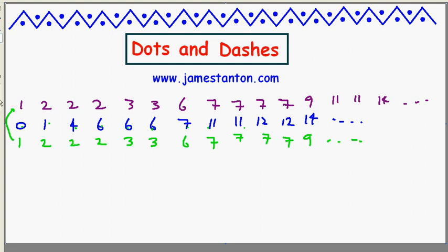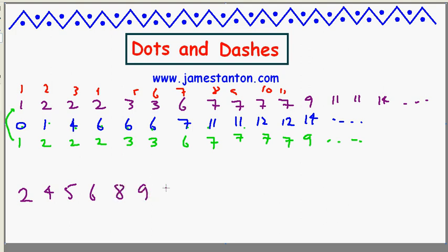Our second property is the following. I'm going to write above our original sequence the actual counting numbers: 1, 2, 3, 4, 5, 6, 7, 8, 9, 10, 11 — and I'm going to add the purple and the red together. So 1 plus 1 is 2; 2 plus 2 is 4; 3 plus 2 is 5; 4 plus 2 is 6; 5 plus 3 is 8; 6 plus 3 is 9; 7 plus 3 is 13; 15, 16, and so on.